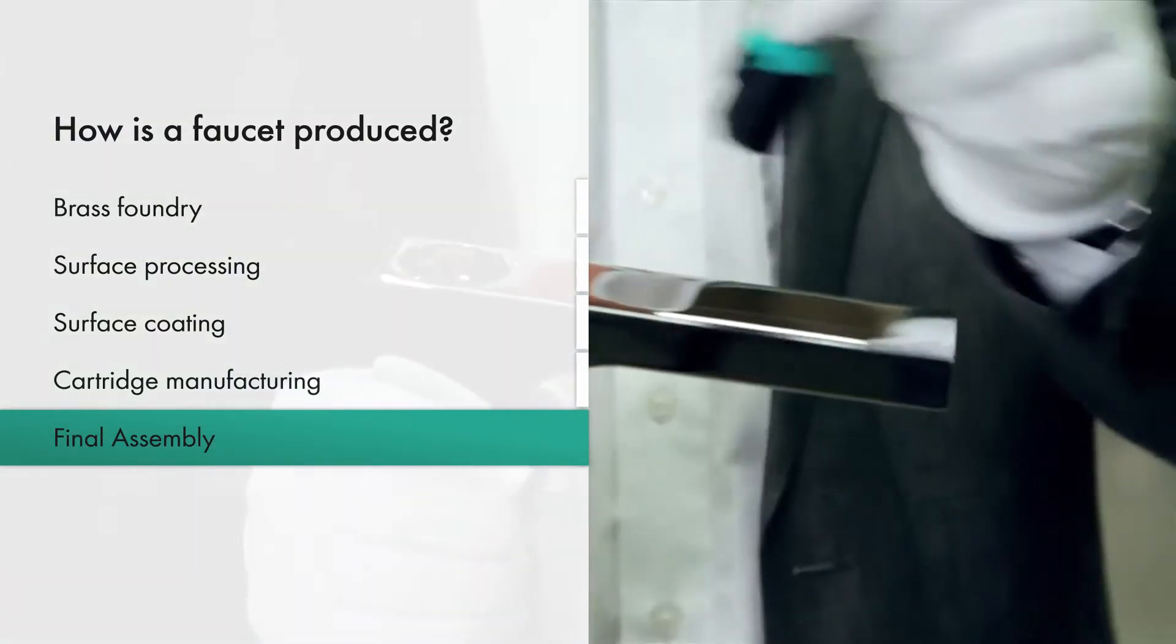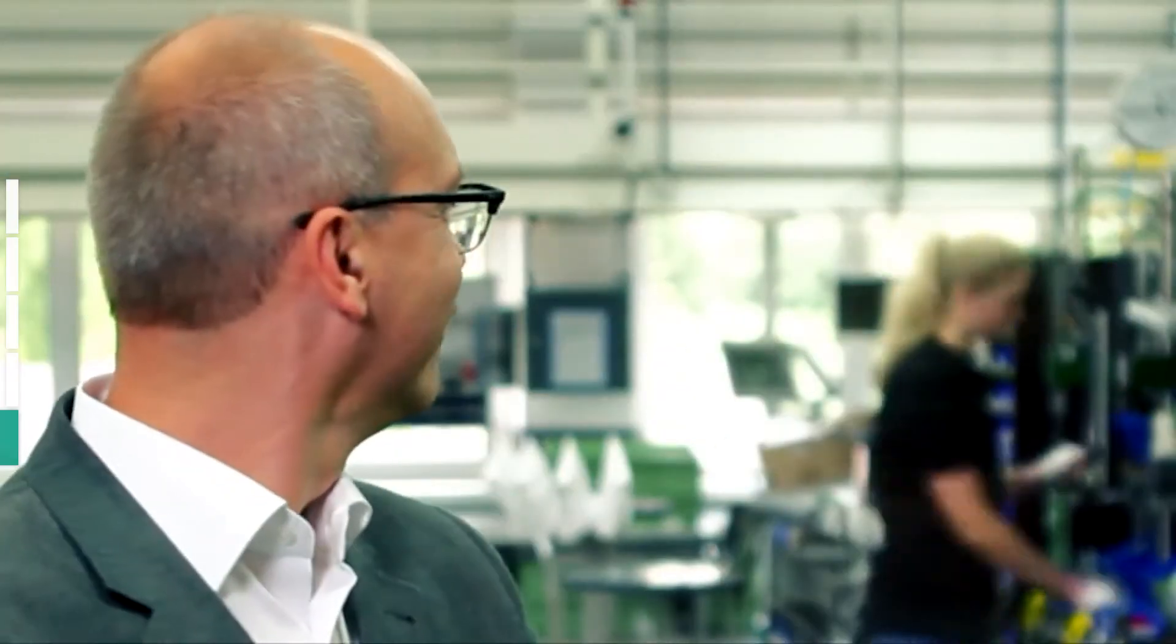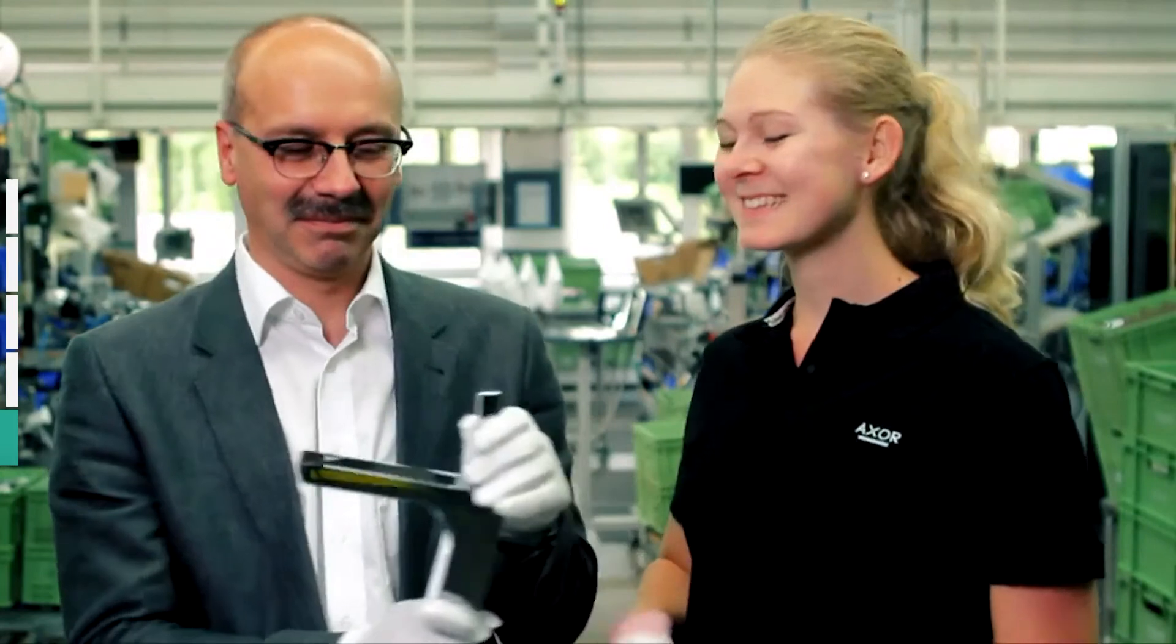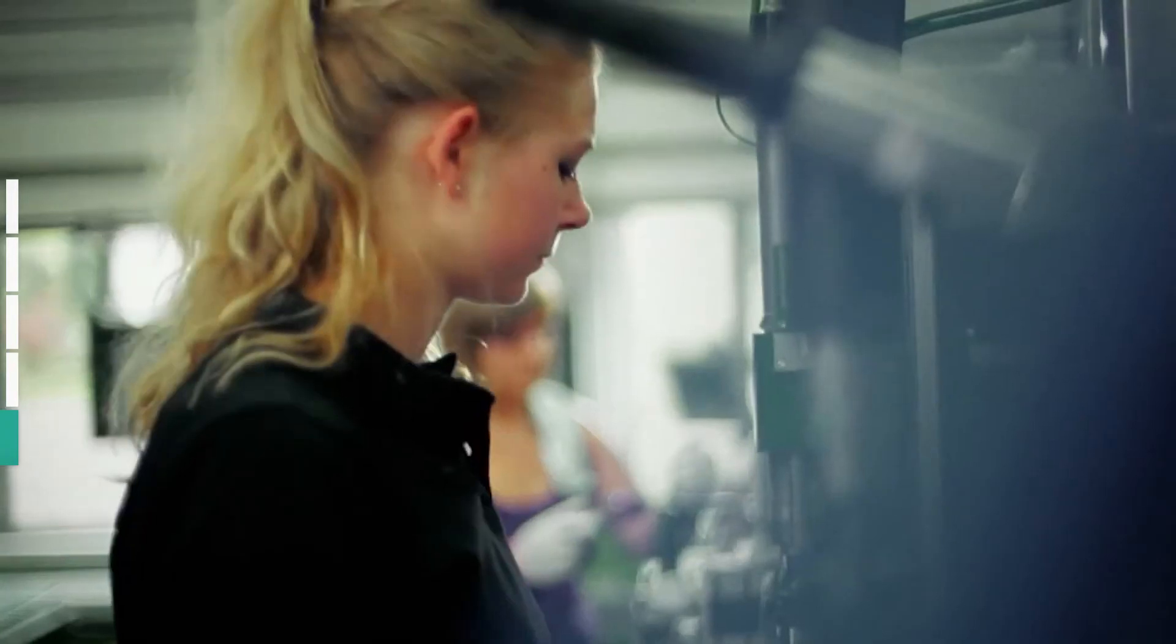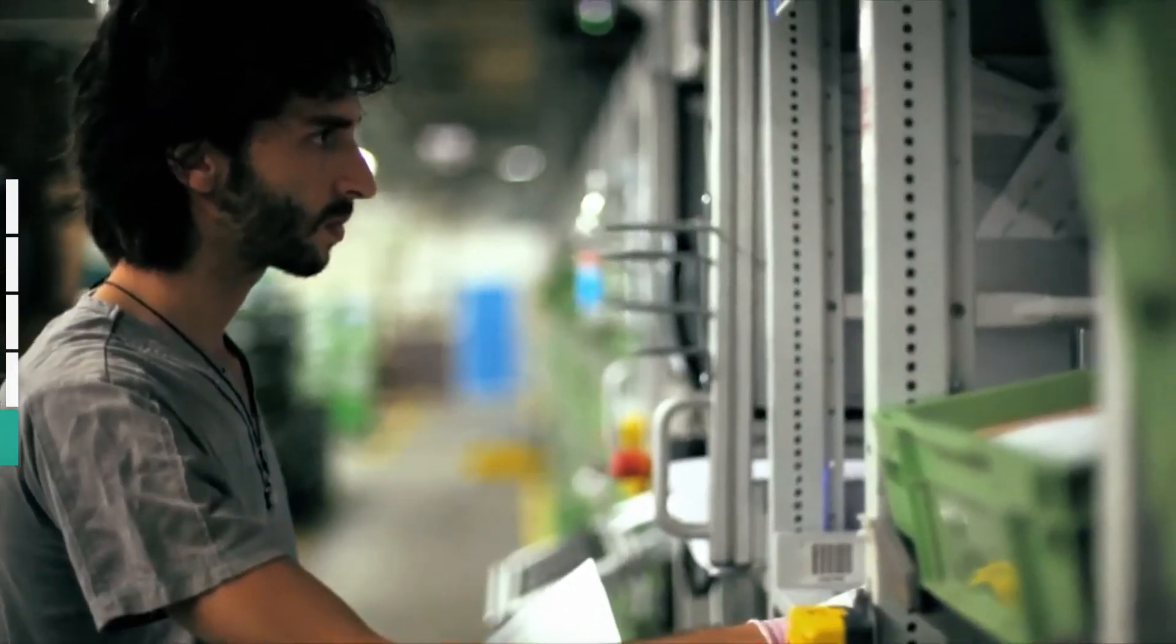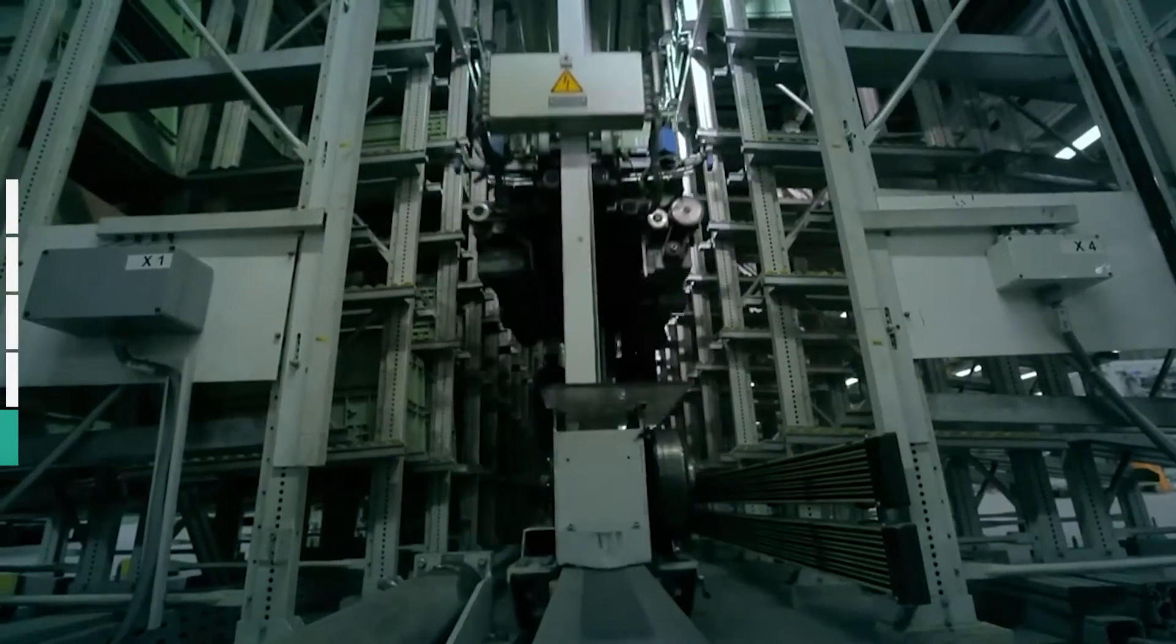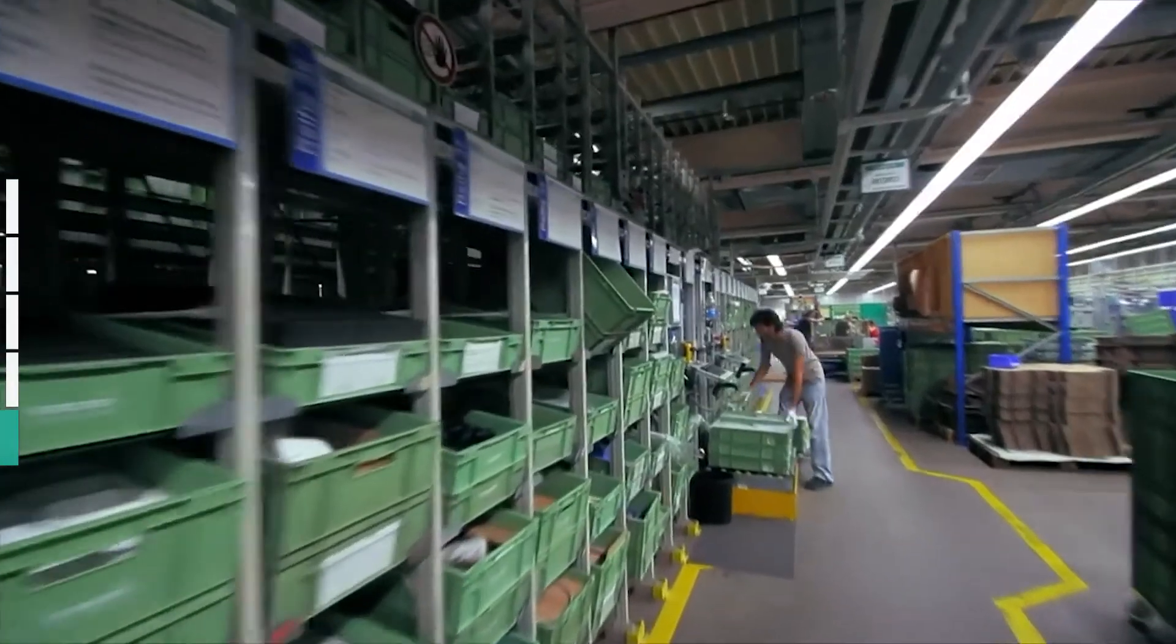The Hansgrohe final assembly department is where everything that belongs together comes together. The mixer is fully assembled and then sent on its way. Not quite as quickly as that, of course. First, the assembly line employees need all the individual parts. These are electronically accessed from the small parts warehouse. Here it's not only speed but also precision that matters. A barcode system ensures that the right parts are quickly transported along the conveyor belts.